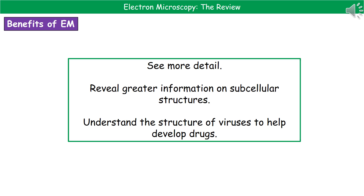The last thing to think about is the benefit of actually using electron microscopes — why use something more expensive and harder to move instead of a light microscope? There are three key points. First, we can see more detail; it's only through electron microscopes that we've had a greater understanding of what's in cells, revealing more information on subcellular structures. Second, it has helped us understand the structure of viruses, which are incredibly small. Third, this understanding has allowed us to develop drugs that target specific viruses based on their structure.